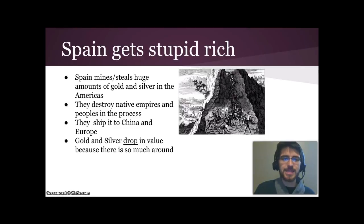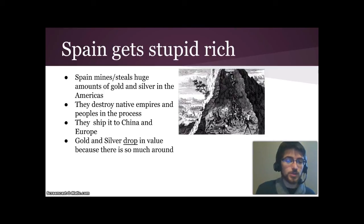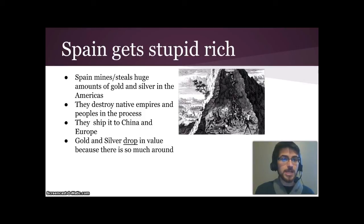Also during this time period, Spain got extraordinarily rich. Spain mined and stole from native empires huge amounts of gold and silver, destroying native peoples in the process. They shipped that gold and silver to China and Europe — so much of it that gold and silver dropped in value because there was so much in circulation. That's the problem of inflation: more and more money means each individual piece of money is worth less.